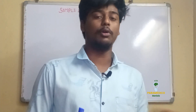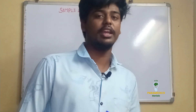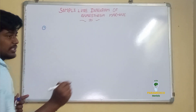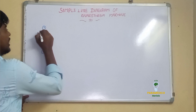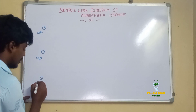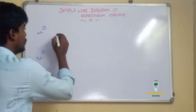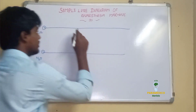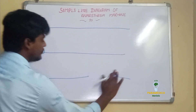In this video we will learn about the parts of the anesthesia machine in a simple diagram. Consider there are three gas cylinders: one is the medical air gas cylinder, another is the nitrous oxide gas cylinder, and the last one is the oxygen gas cylinder. After each cylinder, we draw a line — the air line, the nitrous oxide line, and the oxygen line.